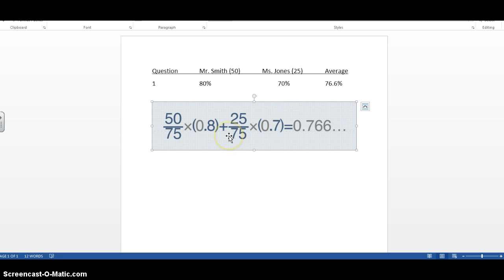The second factor is for Ms. Jones' class, total of 25 students. That's her portion of the students in the course of the total 75 students taking the class, times 70%, 0.7, for the second add-in.